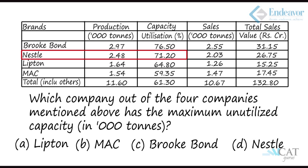For Nestle, production is 2.48 at 71.2% utilization. Approximating 2.5 as 70%, total capacity is around 3.5, giving an unutilized capacity of approximately 1 or slightly more. For Lipton, production is 1.64 at 64.8% utilization, giving a total capacity of about 2.5, so unutilized capacity is only around 0.86 — much smaller. Brookbond and Lipton are eliminated.